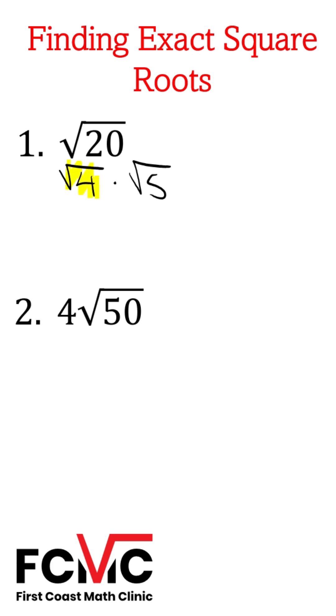The square root of 4, that's our perfect square. So we can take the square root of 4 and get positive and negative 2.